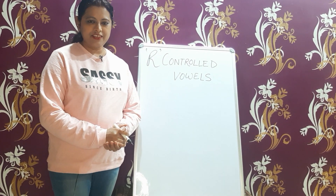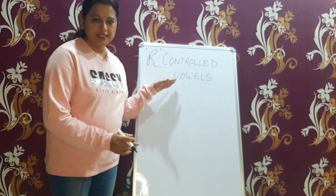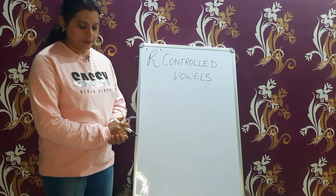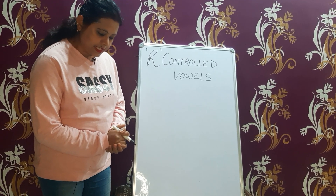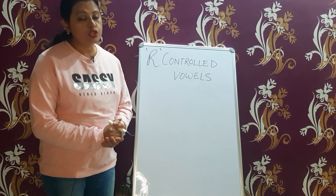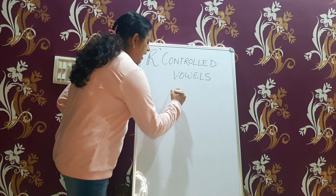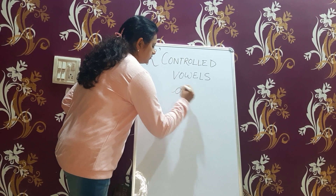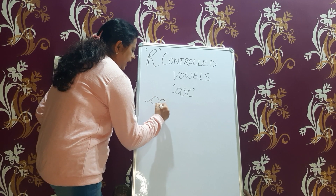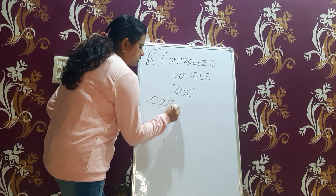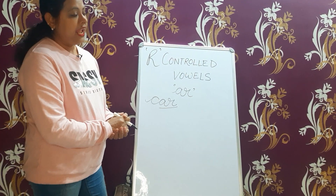Welcome back to another video. R-controlled vowels — what are R-controlled vowels? When the letter R follows a vowel, it is usually forced to change its sound. Example: A-R is pronounced as in the word 'farm'.